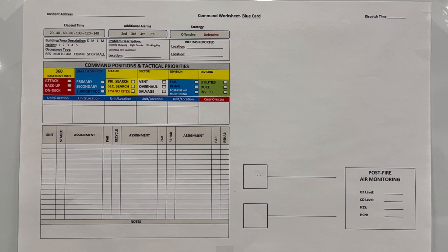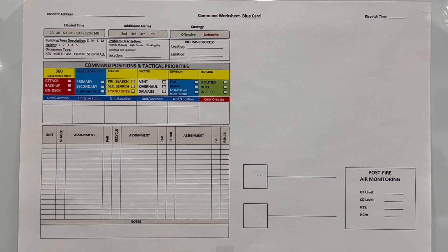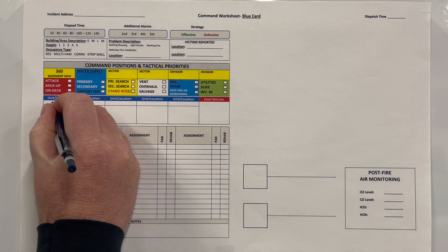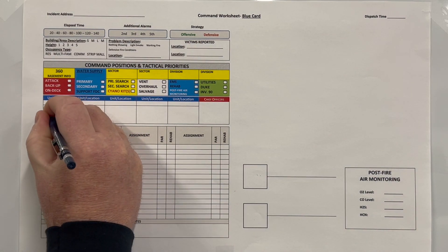The mobile IC on Engine 1 assigned Engine 3 to the on-deck position. When you're pulling up, the first thing you're doing is making sure you're in the correct strategy. Does what I heard on the radio en route match what I see right now? Does the position and function of the units operating match the conditions I'm seeing?